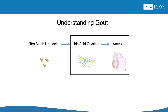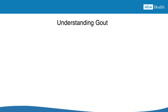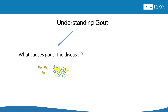But the uric acid crystals remain, at risk of getting disturbed again and triggering another gout attack. Let's call this part of the chain gout attack. So when we're trying to understand gout, it's helpful to answer two separate questions: What causes gout the disease? And what causes a gout attack?